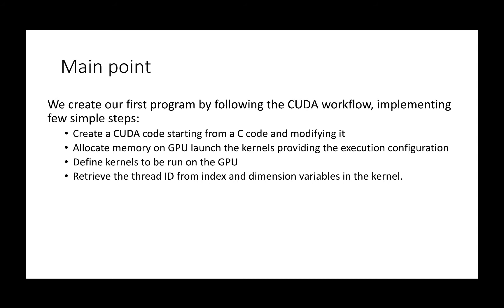First, we will create a CUDA code starting from C code and slightly modifying it. Second, we allocate memory on GPU and launch the kernel, providing the execution configuration. Third, we define kernels to be run on the GPU, and finally we retrieve the thread ID from the index and dimension variables in the kernel.